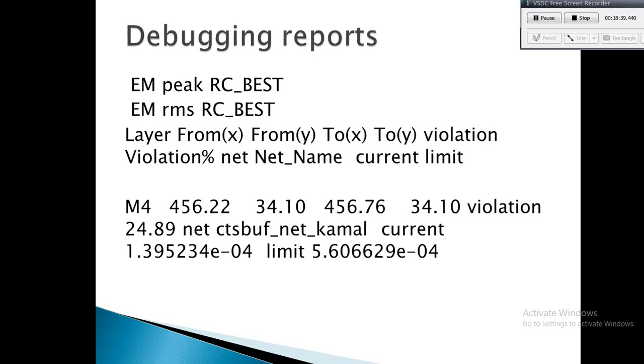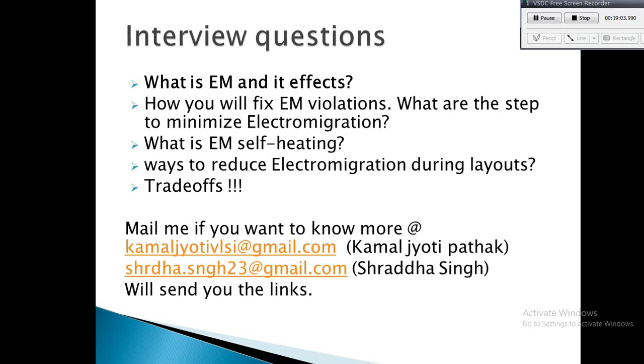The net name is shown, for example cts_buff_net_kamal. The current on that M4 layer is 1.39523×10⁻⁴ and the limit given is 5.606629×10⁻⁴. If it's under the limit, EM is fine. If the current value is more than the limit given by the foundry, there will be EM violation. We need to fix those using the techniques already mentioned and proceed.